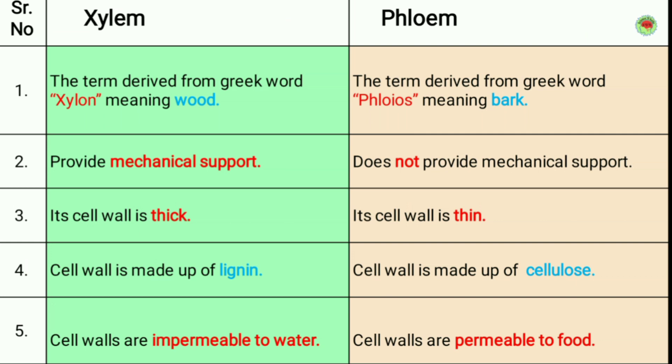First, we will understand where the terms come from. Xylem is derived from the Greek word 'xylon,' meaning wood. Phloem is derived from the Greek word 'floios,' meaning bark.